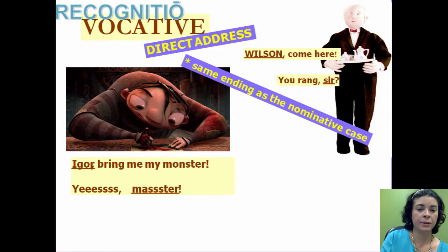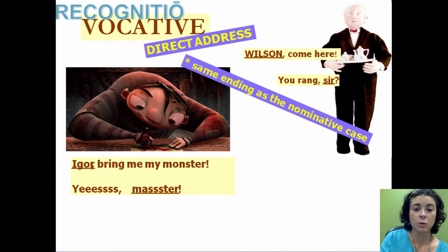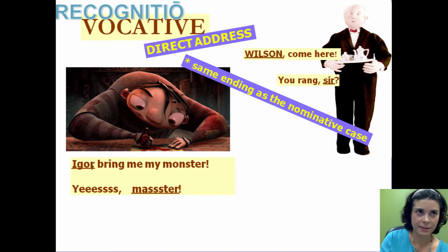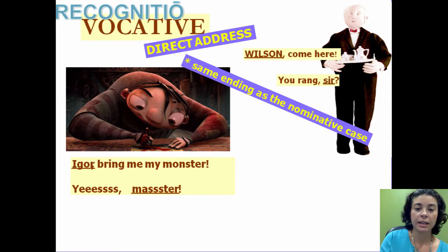Another example: 'Igor, bring me my monster.' Igor is our vocative again because we are talking to Igor. And when Igor responds with 'yes, master,' master is your vocative because it is the address that Igor is using to talk to his master.